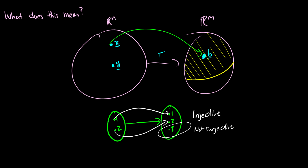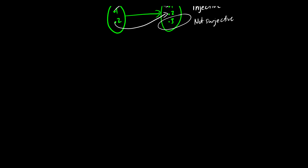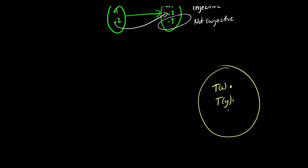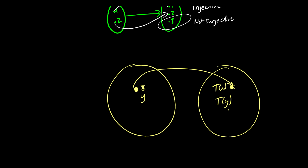Another way of thinking about injective: if T(x) equals T(y), then we can conclude that x equals y. So if T(y) equals zero and T(0) equals zero, then y must equal zero. If TX and TY are the same vector, that means x and y must also be the same vector. That's injective.